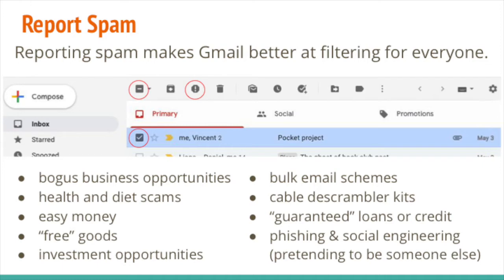When you delete or mark things as spam, they do stay in your email for a little while — I believe 30 days. If you look at that left-hand sidebar where it says inbox, starred, snoozed, etc., there are additional mailboxes there. One is trash, where deleted messages end up for 30 days until they're automatically deleted forever. There's another called spam, where messages that Gmail already thinks should be marked as spam go until they're automatically deleted or you manually delete them. You can use the checkbox at the top of the page to check off an entire page worth of messages to act on all at once.